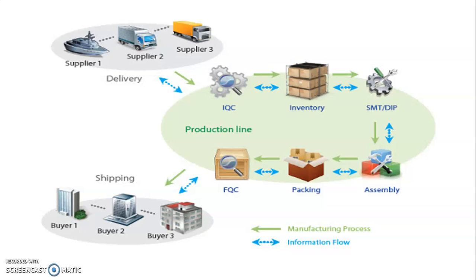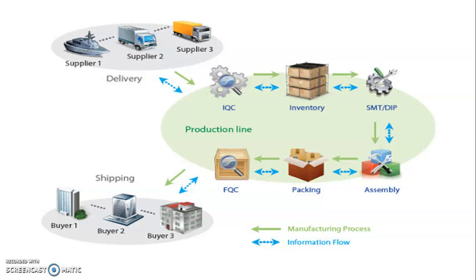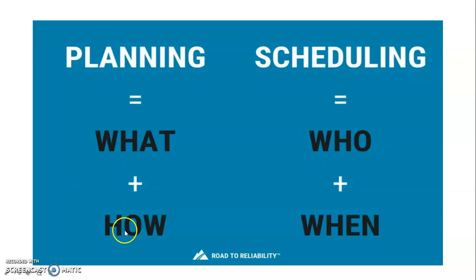Routing manages how, what, when, how much, and where to produce in a manufacturing company. It systemizes the process and nurtures the optimum realization of resources to get the best results. Planning decides what has to be made, but scheduling decides who has to make it. Planning says how much has to be made, but scheduling decides when it has to be made.